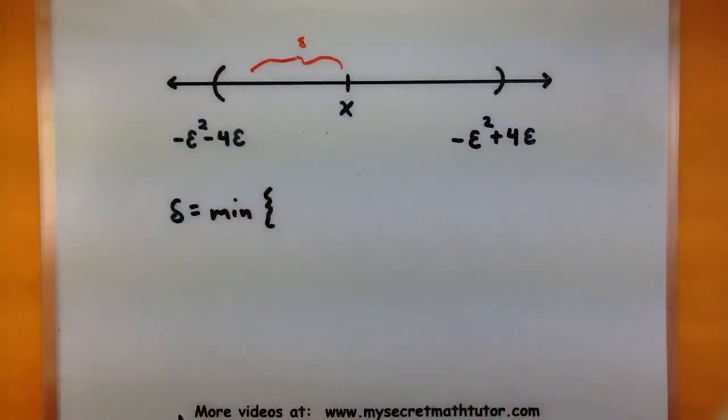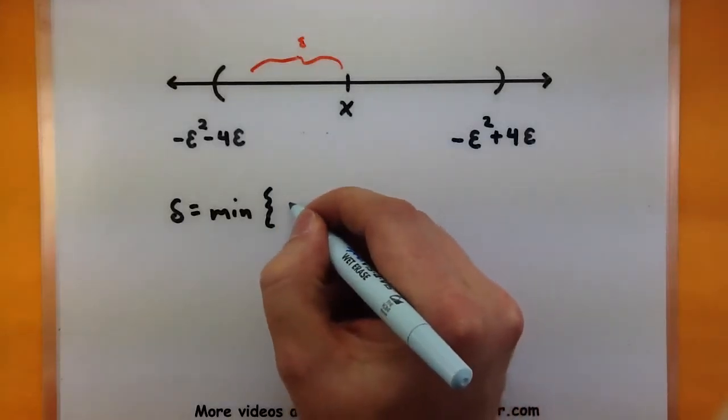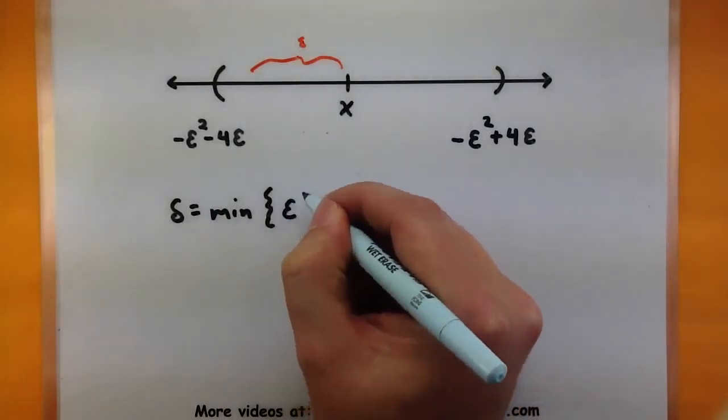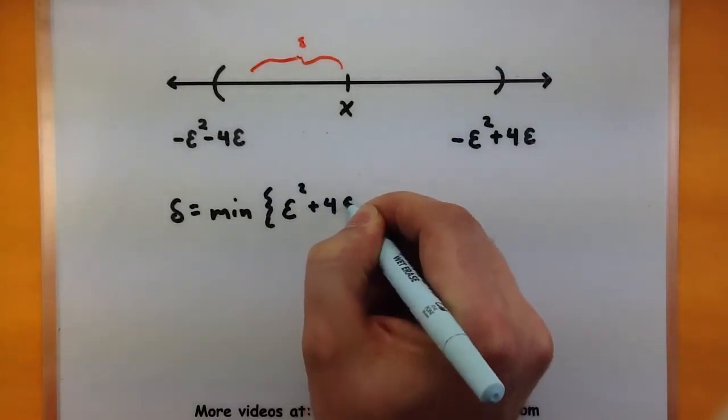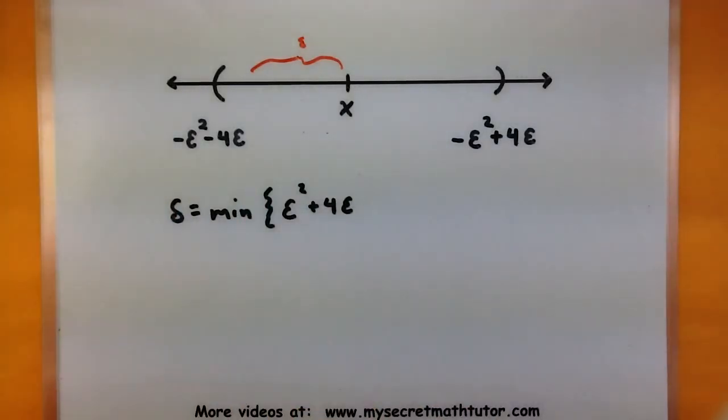So this is some sort of negative number. If I'm describing its distance, I would say that its distance away is just epsilon squared plus four epsilon. I basically just multiplied everything through by a negative since it is a negative.